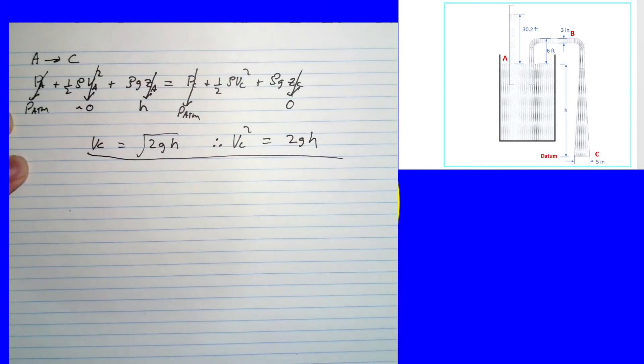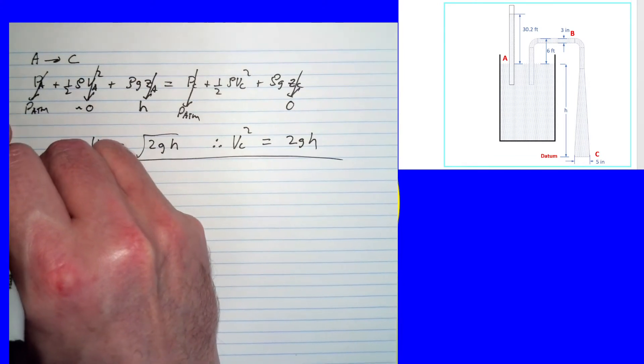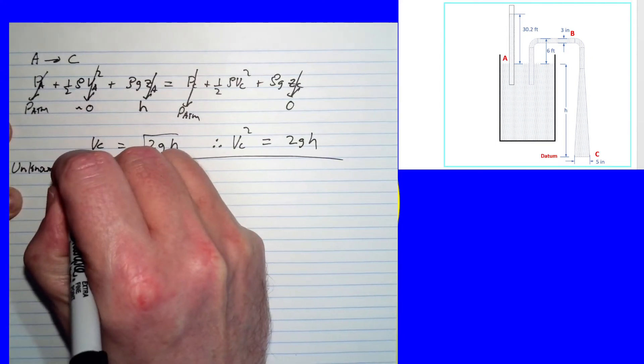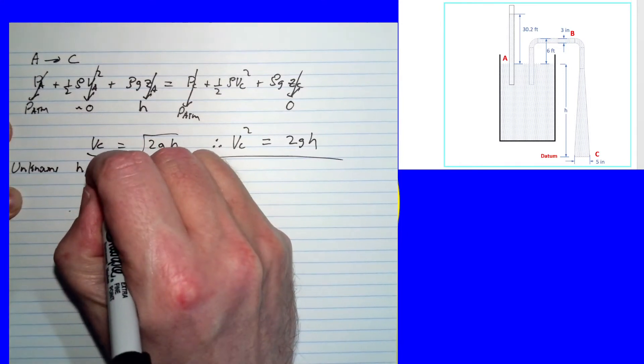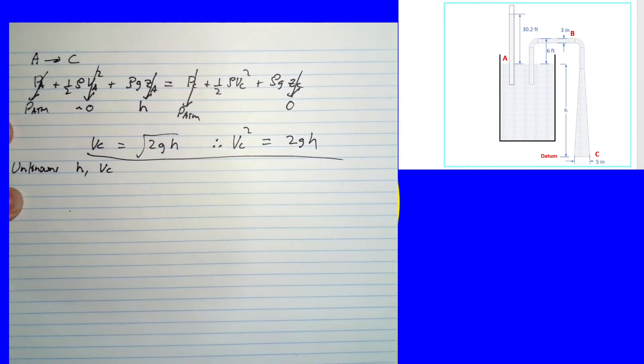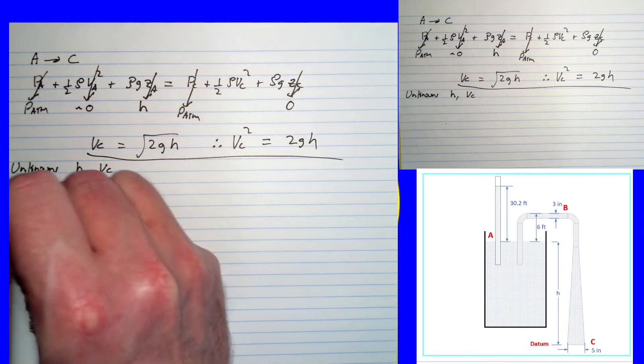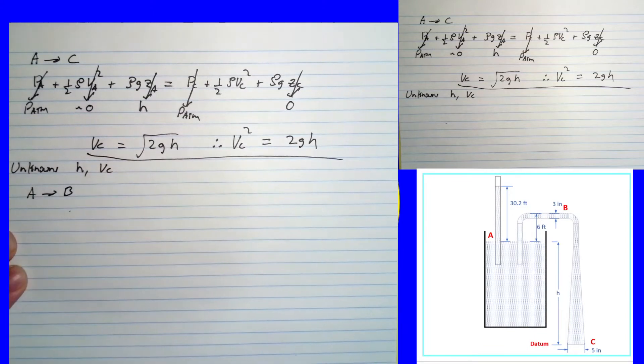So we'll probably come back and use these equations. Before we go on, let's note our unknowns. Right now we have two, which is h and the velocity of C. We don't really care what the velocity of C is. We're not trying to find that. We are trying to find h, and so clearly we have two unknowns, one equation. So we need to keep going. All right, so we've got some more work to do. So now let's apply Bernoulli's equation, point alpha to Bravo.